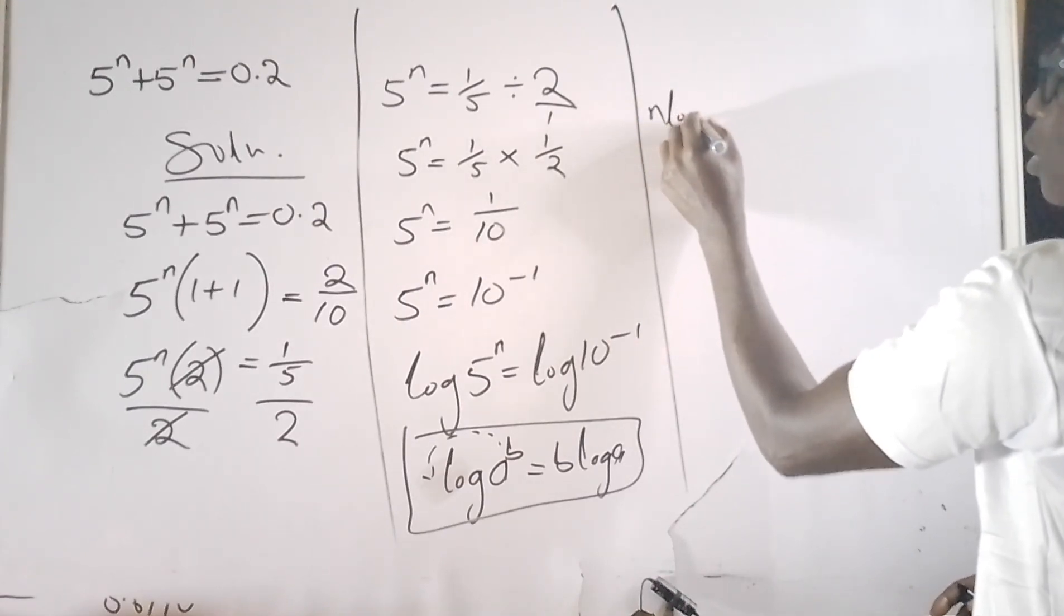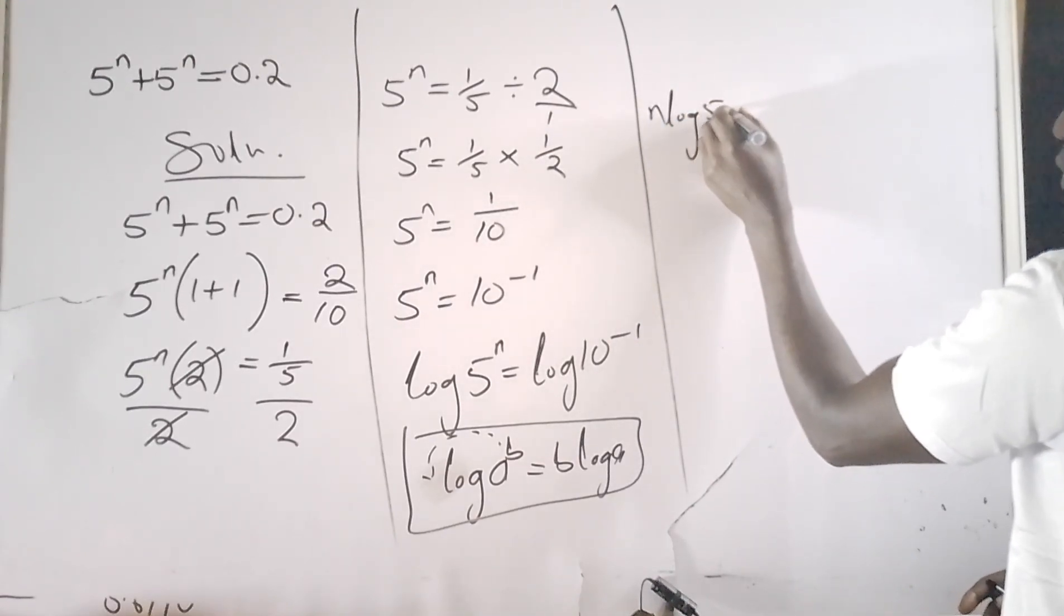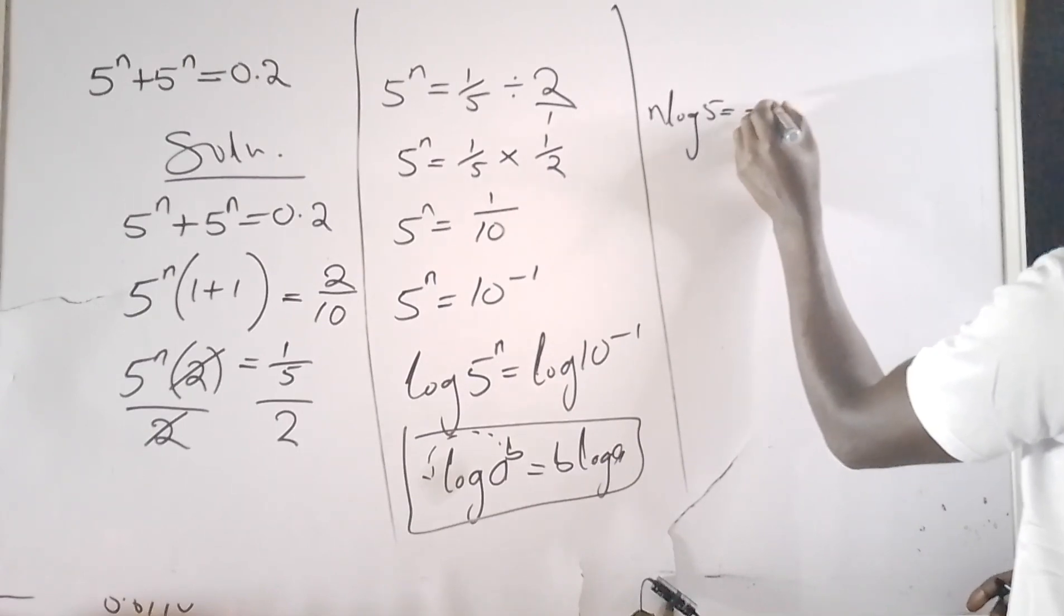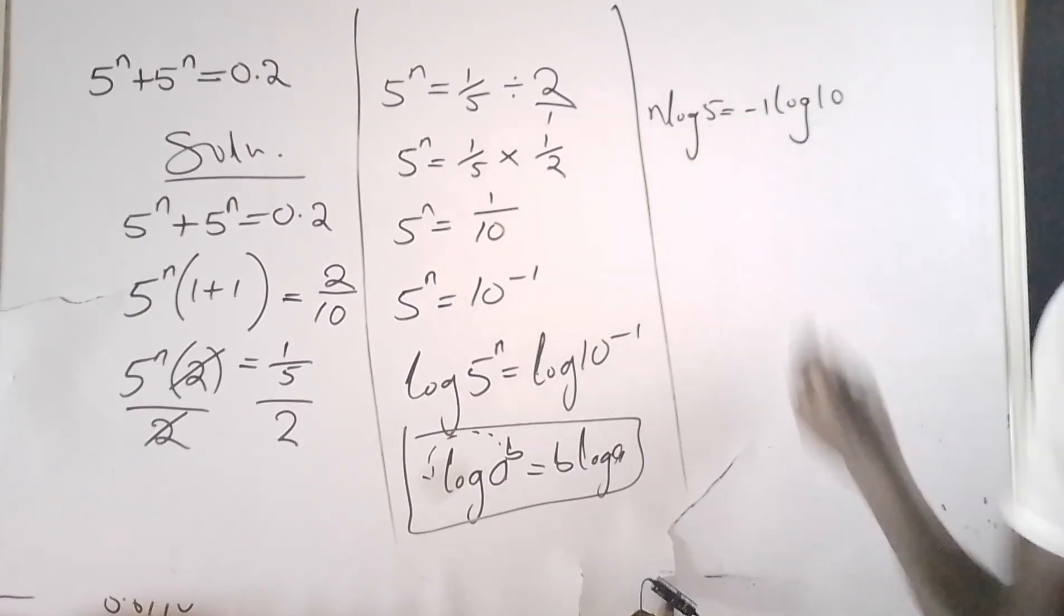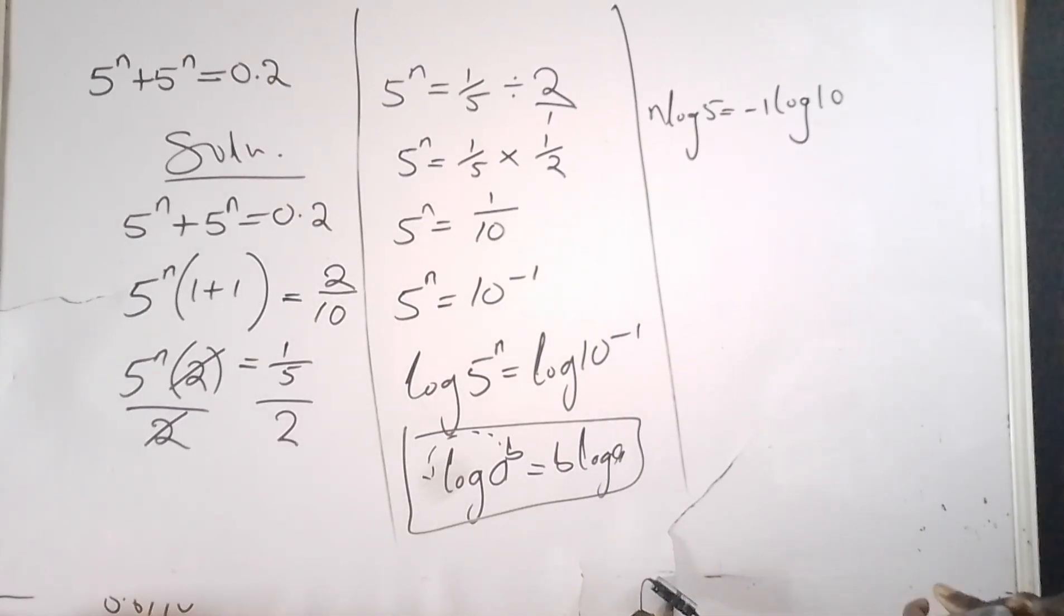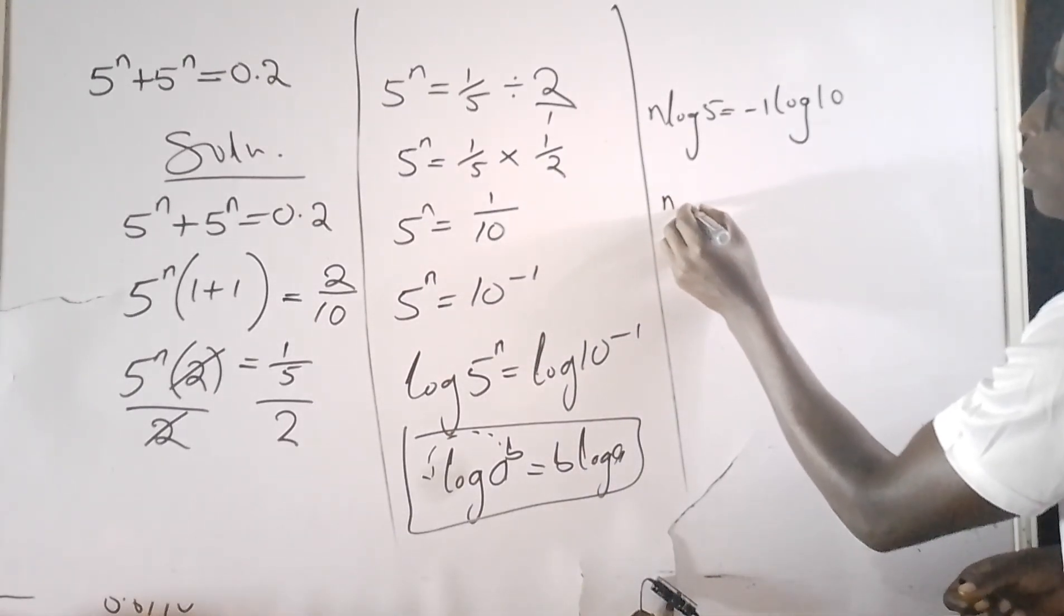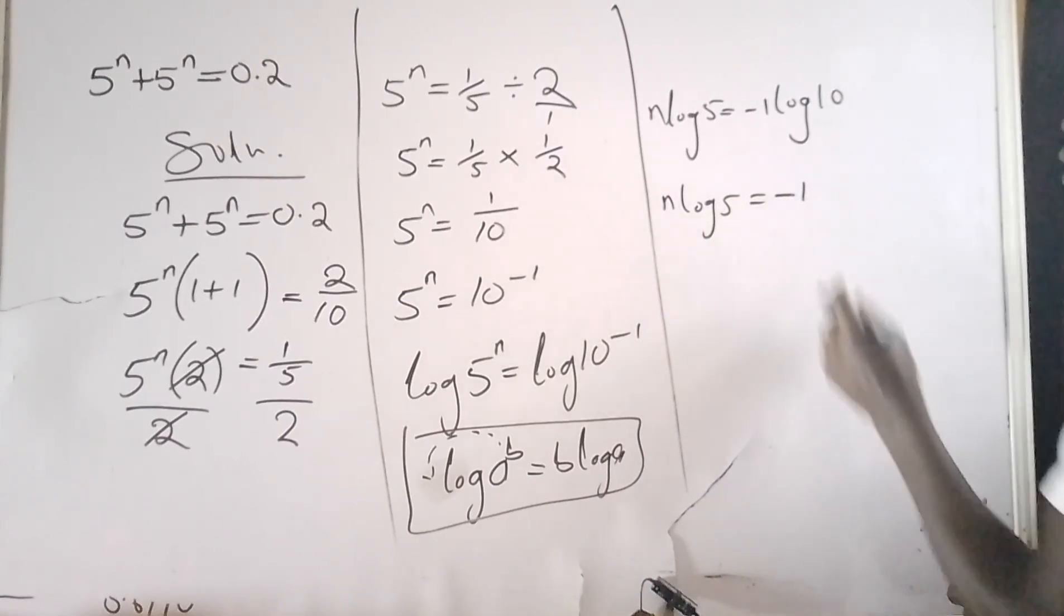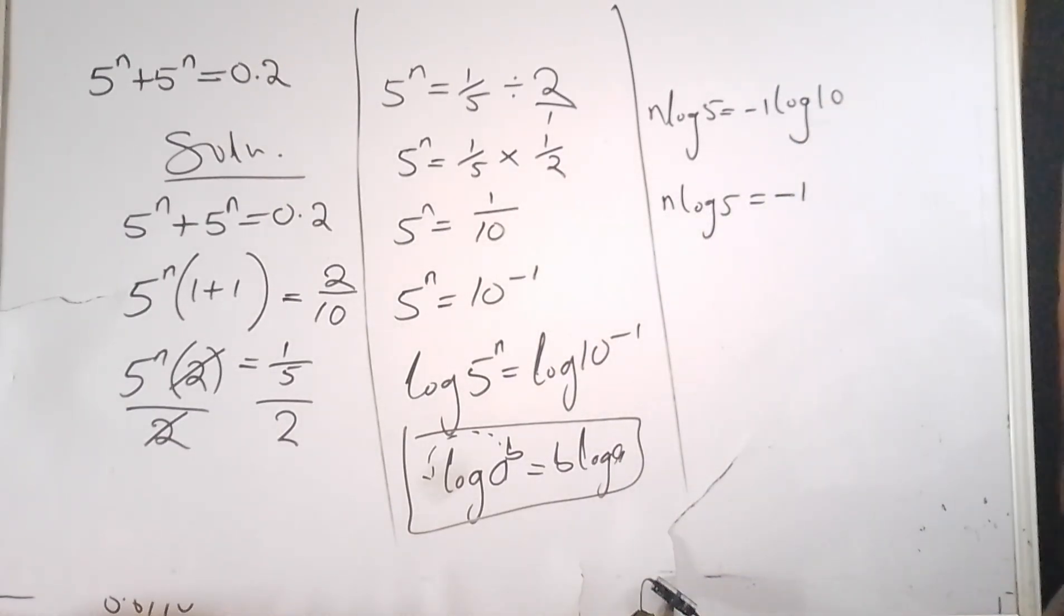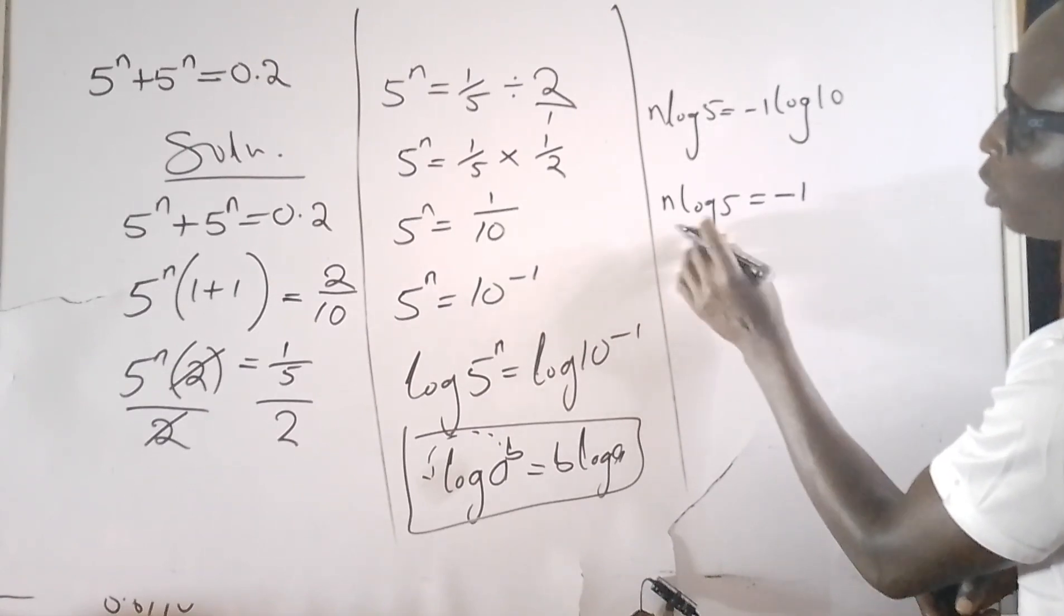This exponent will come down. Going by this property, I will apply it here, which means we'll have n·log(5) equals -1·log(10). But remember log(10) is 1, so n·log(5) equals -1, because -1 times 1 is -1.